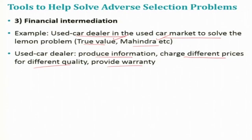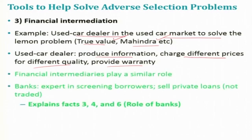How about the case of financial markets? In financial markets, financial intermediaries play a similar role to what used car dealers do in the used car market. A financial intermediary such as a bank becomes an expert in producing information about firms so that it can sort out good credit risks from bad ones. An important element of a bank's ability to profit from the information it produces is that it avoids the free rider problem by primarily making private loans rather than by purchasing securities that are traded in the open market.